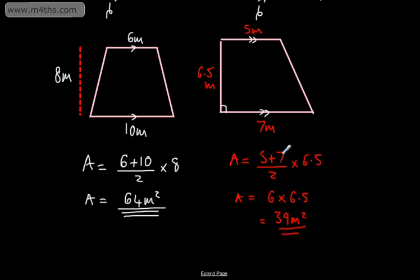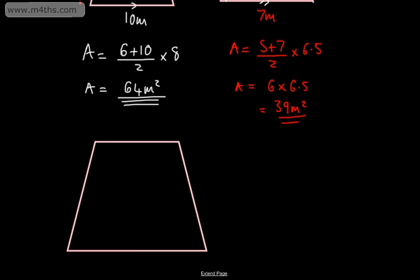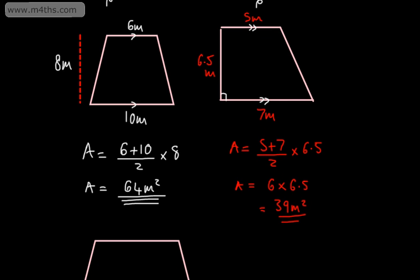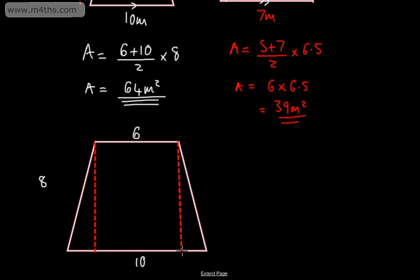Let's say you really didn't like that particular method — it's definitely worth learning, and certainly if you take your maths further it's quite important. But let's take these dimensions again and look at an alternative approach. We'll drop perpendicular heights down, splitting the trapezium into one triangle here, one rectangle in the middle, and one triangle here. You could even be cheeky and have these two triangles as the same.